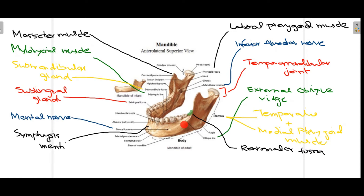This external ridge-like structure is the external oblique ridge of the mandible. On the ramus we have two muscles of mastication attached: first is the temporalis muscle and second is the medial pterygoid muscle. The green highlighted structure just behind the third molar is the retromolar fossa.